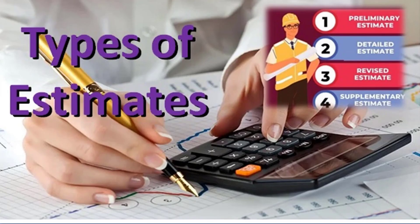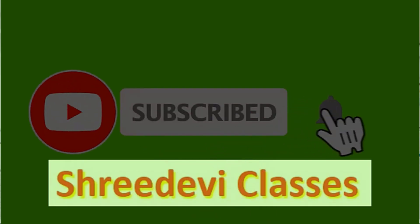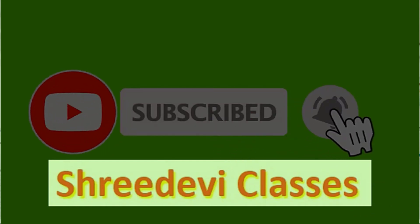We hope this learning video has explained all types of estimates used in electrical project installation. Now you understand what is approximate or rough estimate, what exactly is required in a detailed estimate, and what are revised and supplementary estimates. Our other learning videos of the same playlist are equally useful in preparation of this estimation subject, and you can use them in your learning as well as share them with your friends.